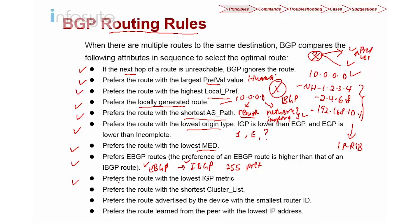If there is still a tie, BGP prefers the route with the lowest IGP metric, only if load balancing applies. Next, it looks at the cluster list. If the cluster list is not available, it looks at the smallest router ID. Finally, if everything remains equal, it selects the lowest IP address as the default gateway. This is Huawei's BGP selection criteria for choosing the best next hop to install.